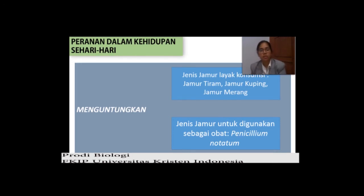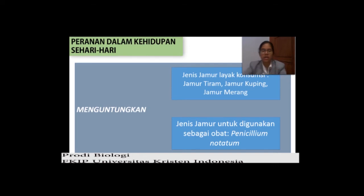Untuk peranan jamur dalam kehidupan sehari-hari, yang pertama kita bahas yaitu jamur yang menguntungkan. Yang pertama untuk jenis jamur yang layak konsumsi: ada jamur tiram, jamur kuping, dan jamur merang. Untuk jenis jamur ini sendiri, sudah lebih dari 600 jenis yang layak untuk dimakan. Tetapi untuk ketiga ini — jamur tiram, jamur kuping, dan jamur merang — ini adalah jenis jamur yang sudah banyak dibudidayakan dan memberikan dampak ekonomi yang baik.